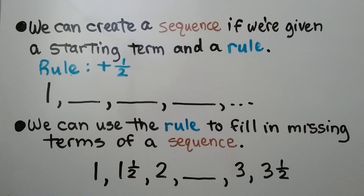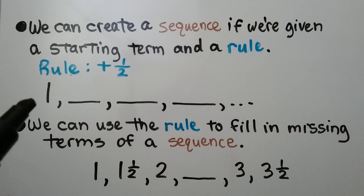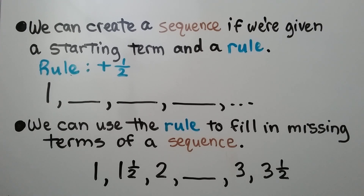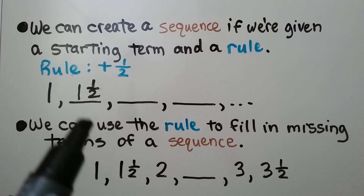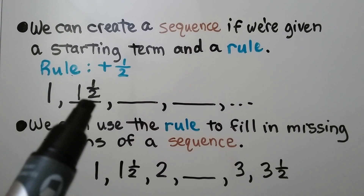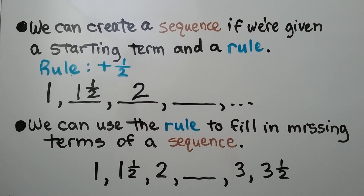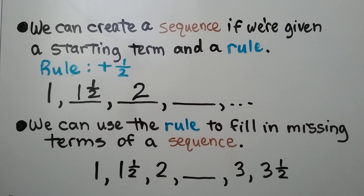We can create a sequence if we're given a starting term and a rule. If the rule is plus one half and we're starting with one, one half more would be one and a half. Plus a half, we add a half to this and it would be two — two whole. Plus a half again would be two and a half.